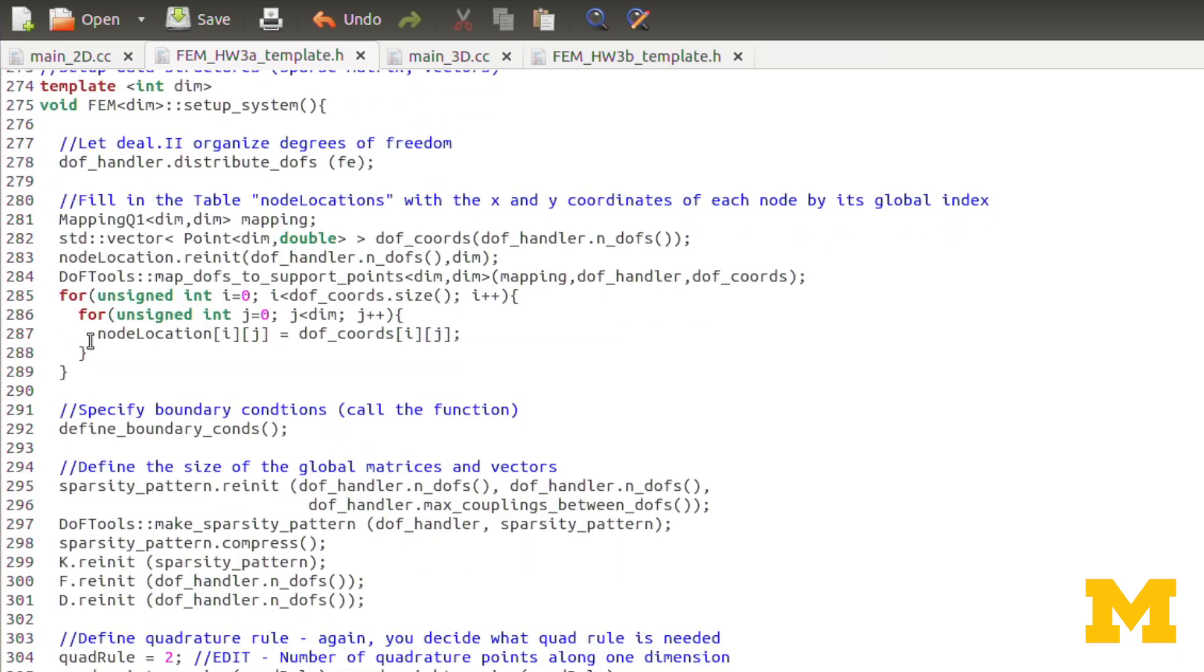Here in Setup System it looks very similar to Homework 2, which was our first coding assignment. Slight differences here is that in no location, again, we have two indices. The first is your global node number, just as before. But the column number now is which component of the position vector you want - the x component, the y component, or in 3D, the z component.